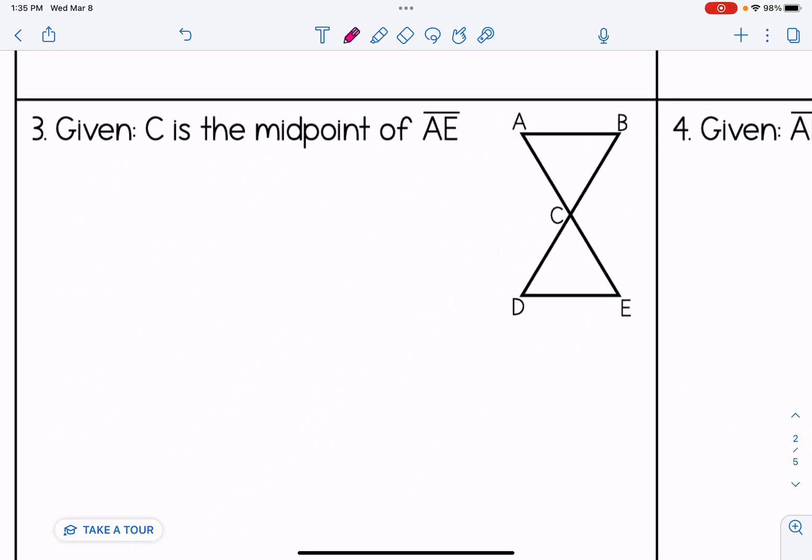Number three, C is the midpoint of AE. That means if I take AE, C has to be the middle of it. So that gives me two congruent parts. We're going to use tick marks to indicate congruent segments. So I know that AC is congruent to EC.